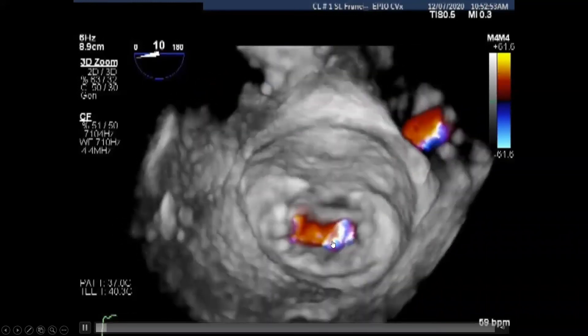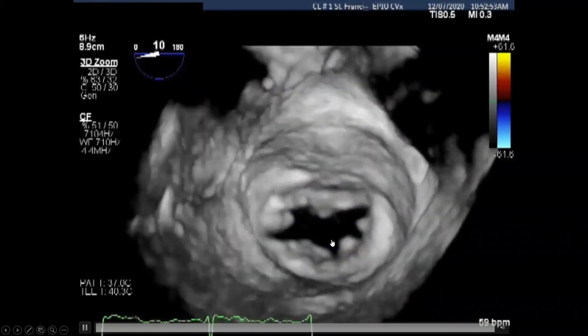Then when we add color Doppler, we can see where the pathology is located. This looks like it's a centralized pathology. It looks like the area of coaptation is quite long.